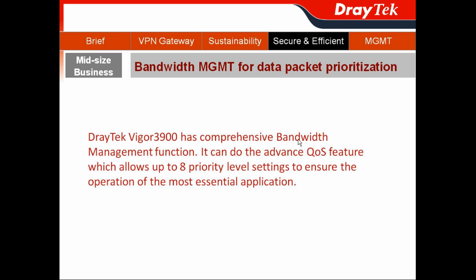Of course, Vigor3900 can do the bandwidth management for your data packet prioritization. It also offers the advanced QoS functions which allows up to 8-level priority setting to ensure the operation for the most essential applications.